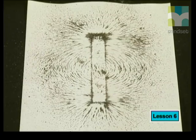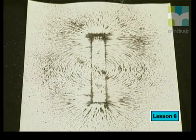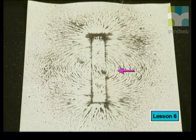The strength is shown by how close together the field lines are. On this image we can see that the magnetic field is strongest at the ends of the magnet but weaker in the middle.